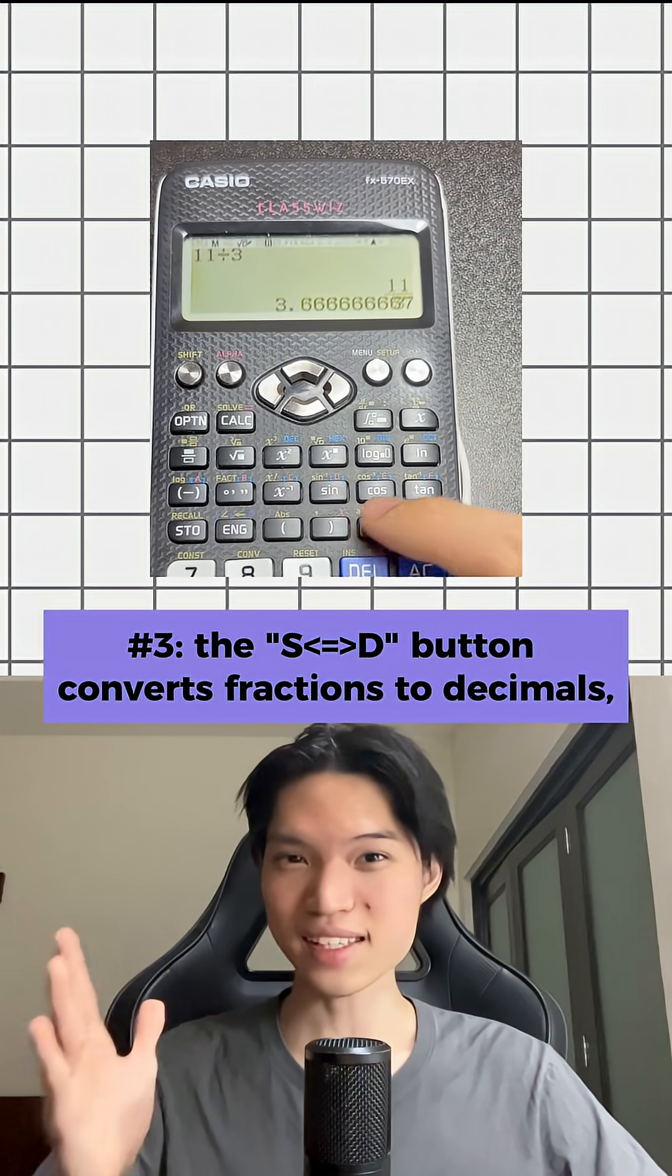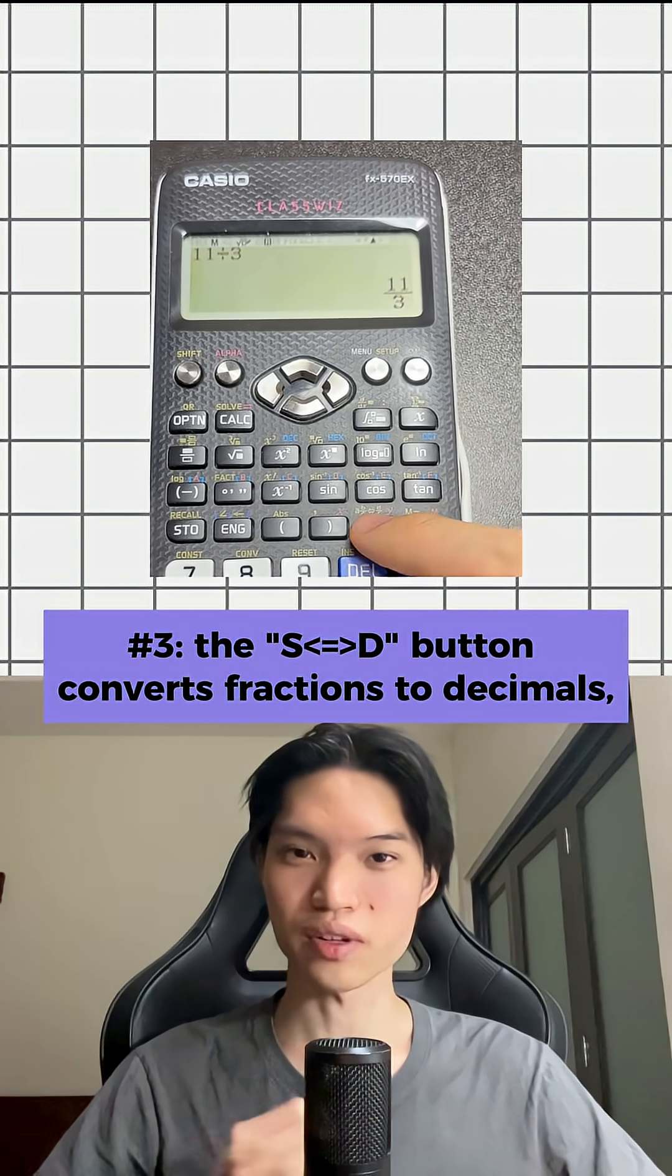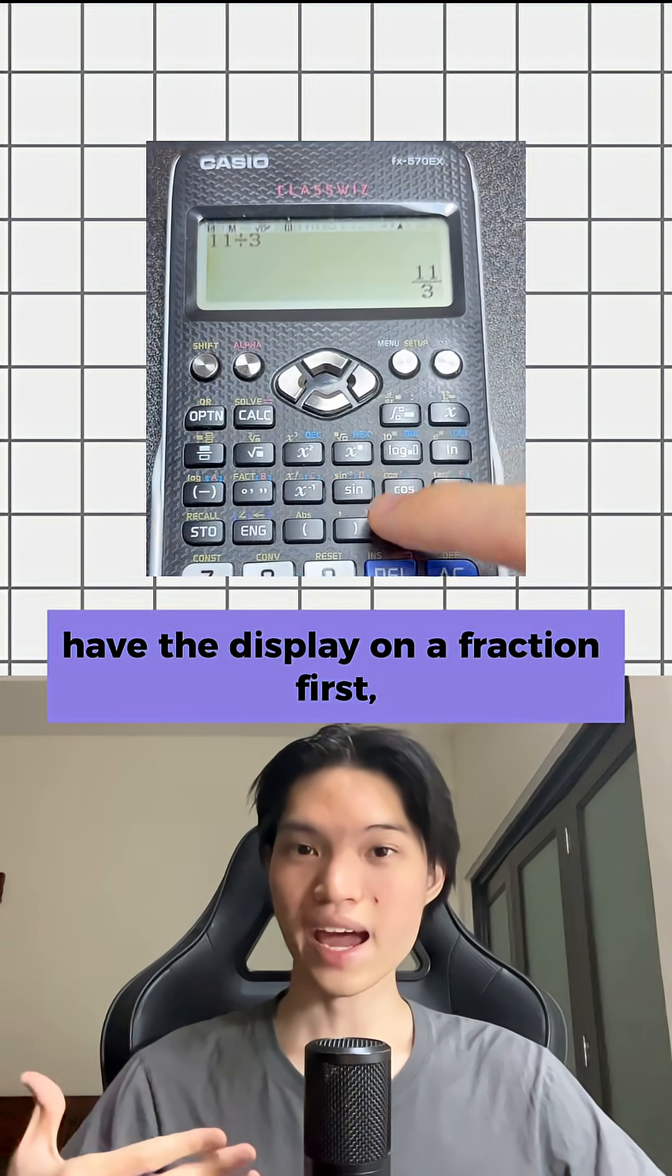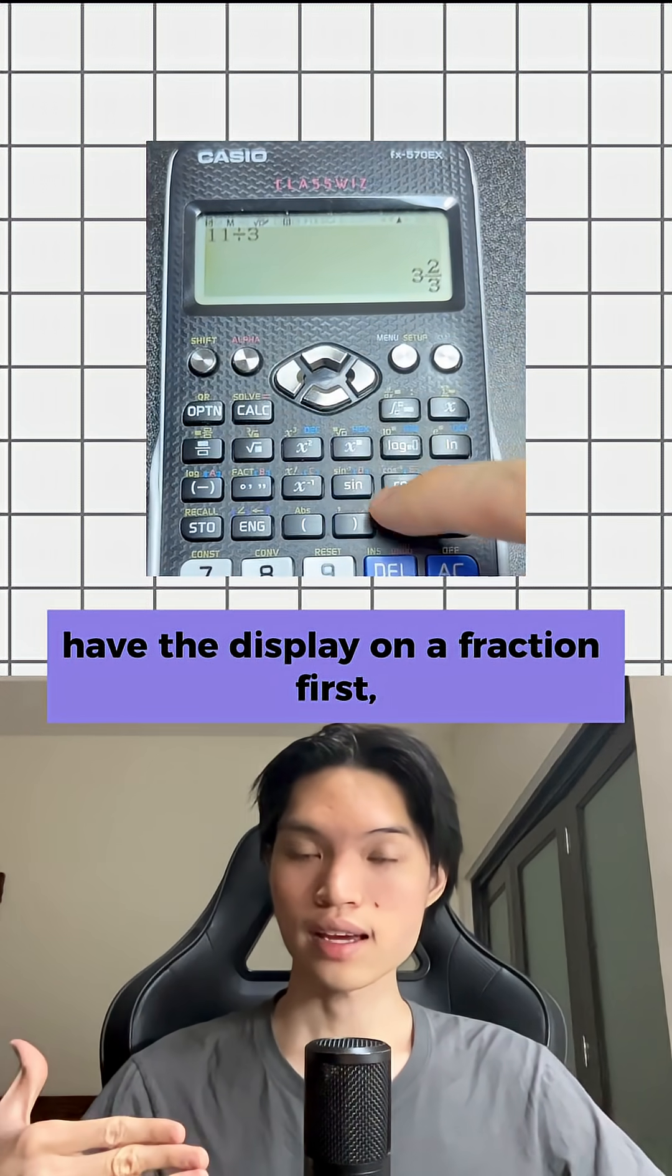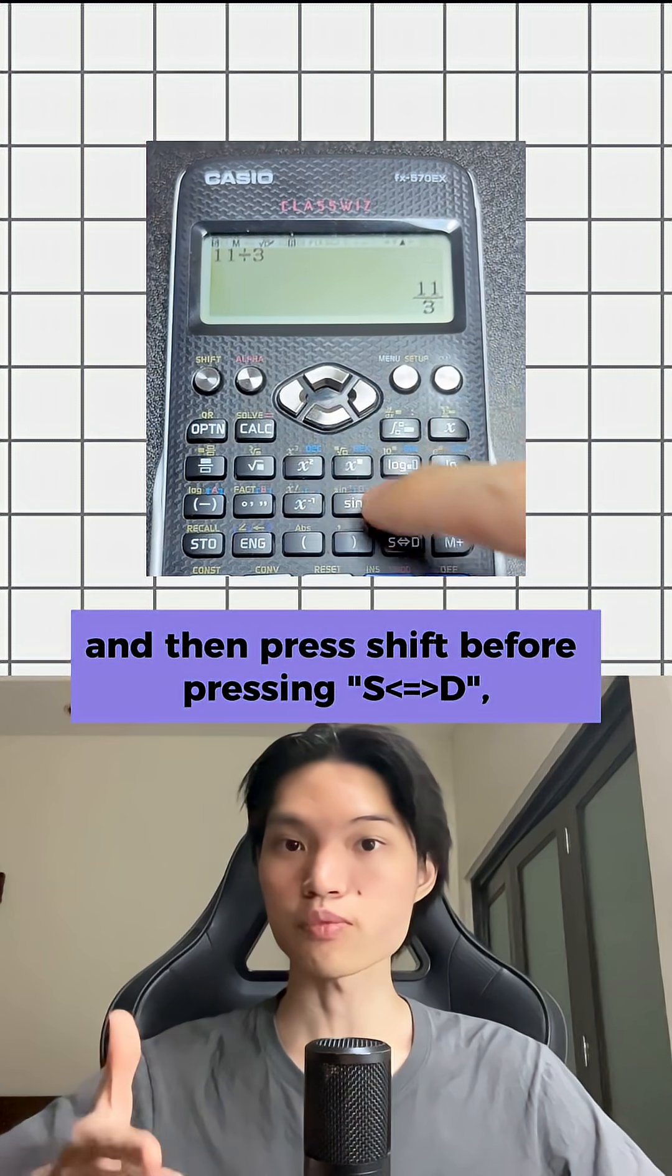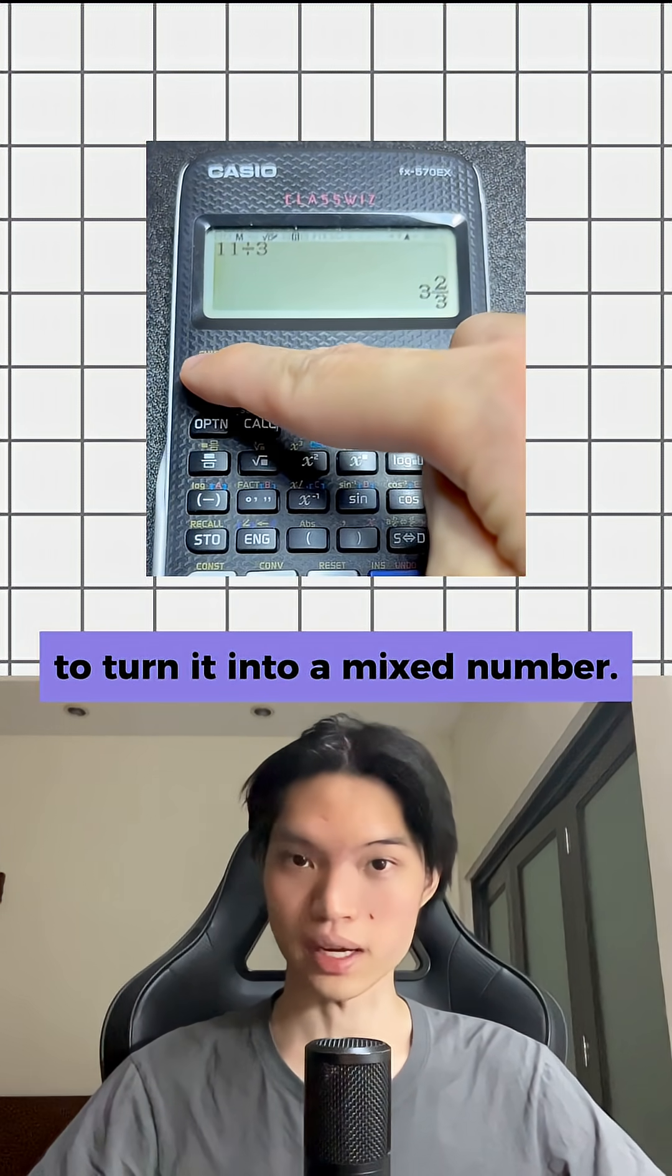3. The SD button converts fractions to decimals and vice versa. To get mixed numbers, have the display on a fraction first, and then press shift before pressing SD to turn it into a mixed number.